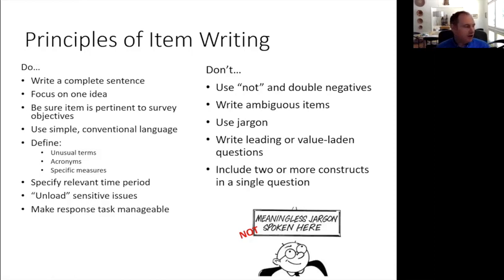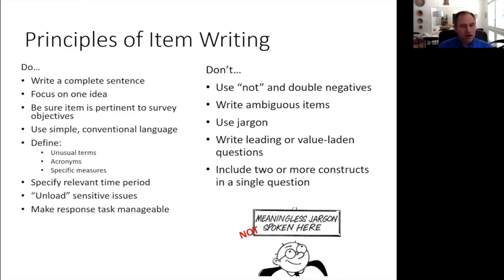Here are some principles of item writing. Write a complete sentence that focuses on one idea. Be sure it's pertinent. Use simple, conventional language; if there are unusual terms or acronyms, define them. If you're asking about a behavior, ask about the time period in which it occurred — not 'did you have anal sex without a condom,' but 'the last time you had anal sex' or 'in the last three months, have you had this behavior.'